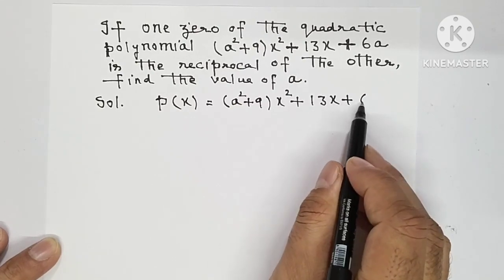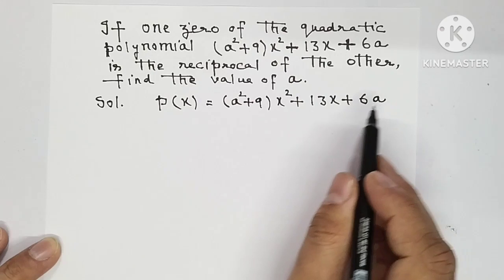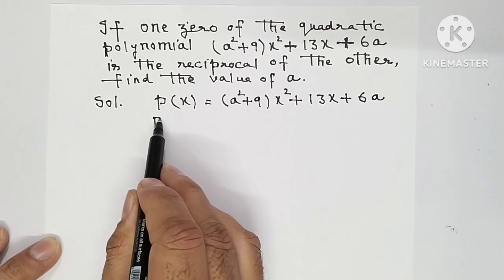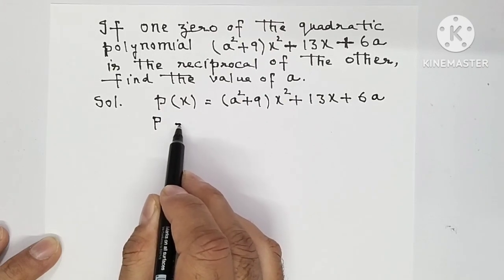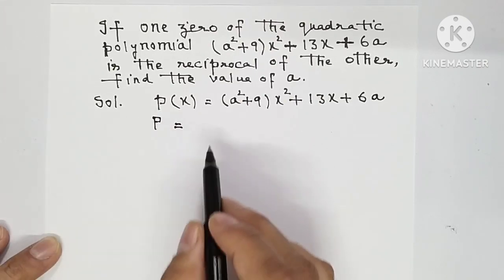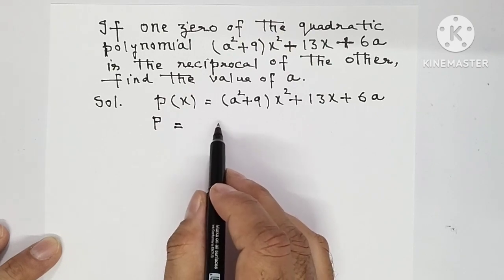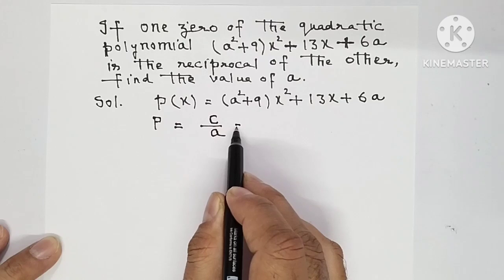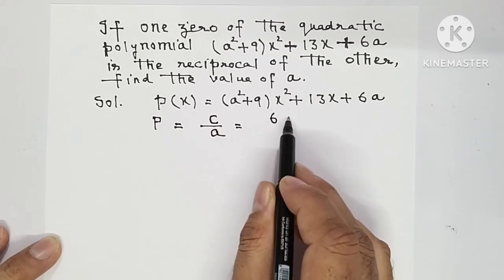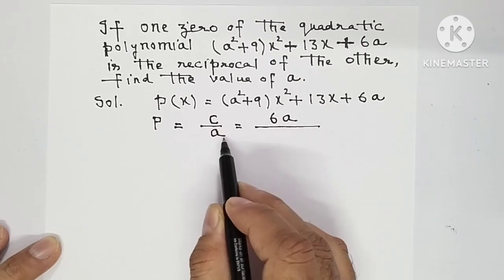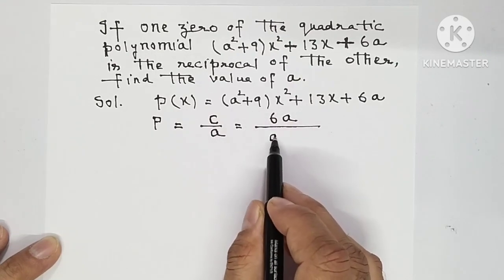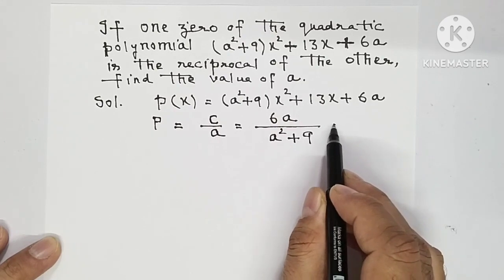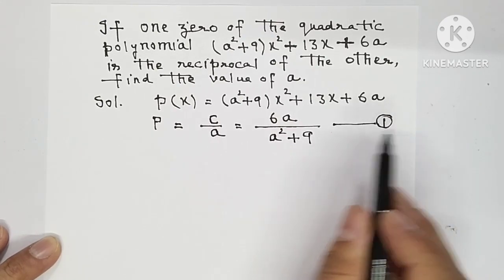So this is the quadratic polynomial. Now, we have product of zeros. Product of zeros is c upon a. Here c is the value of the constant term.